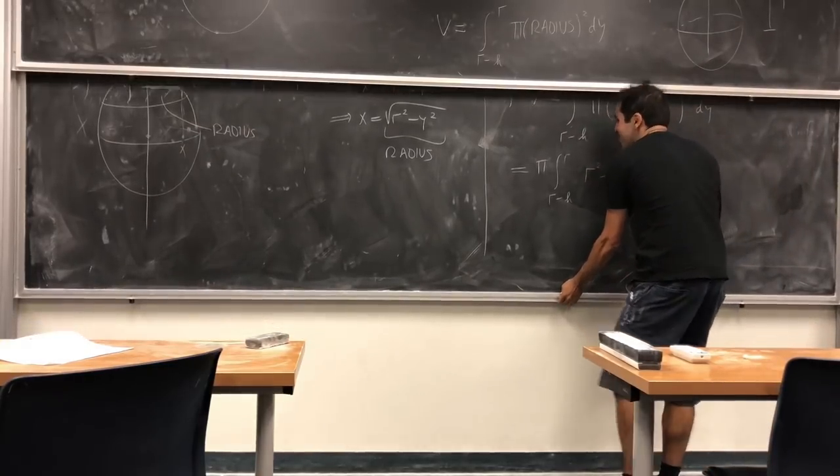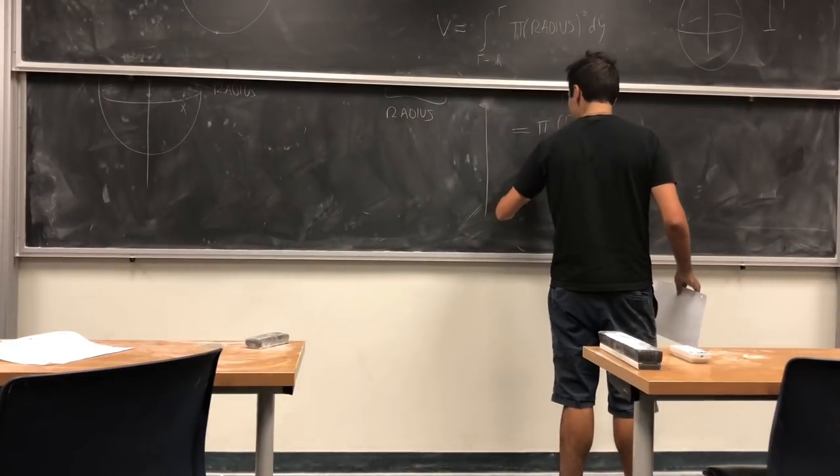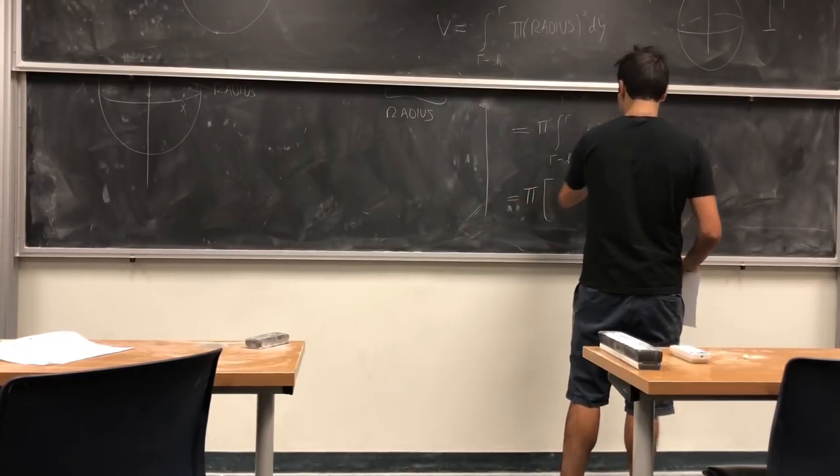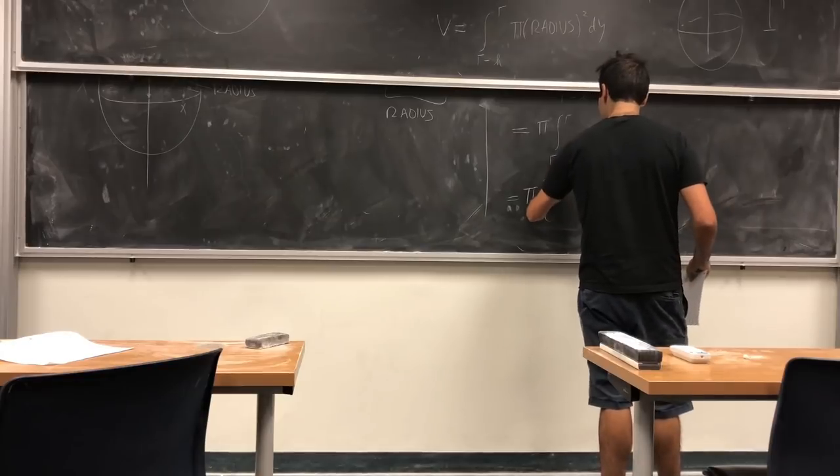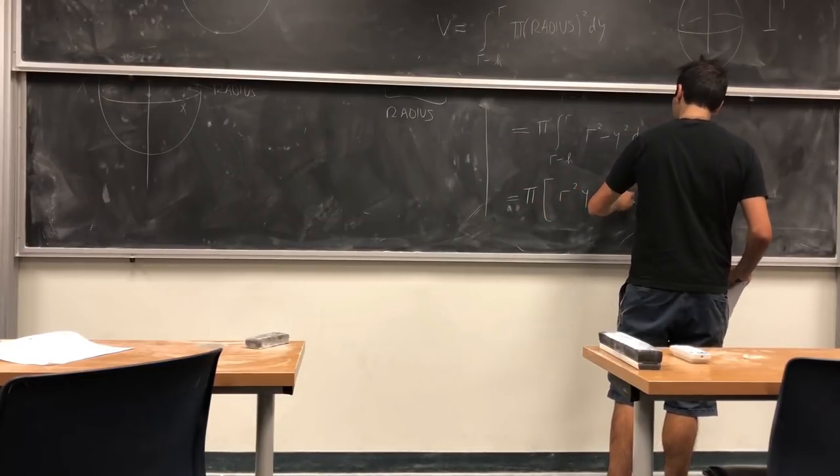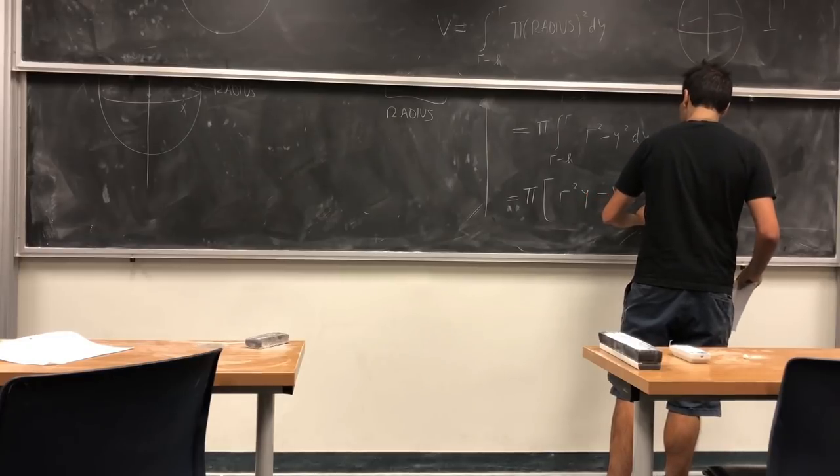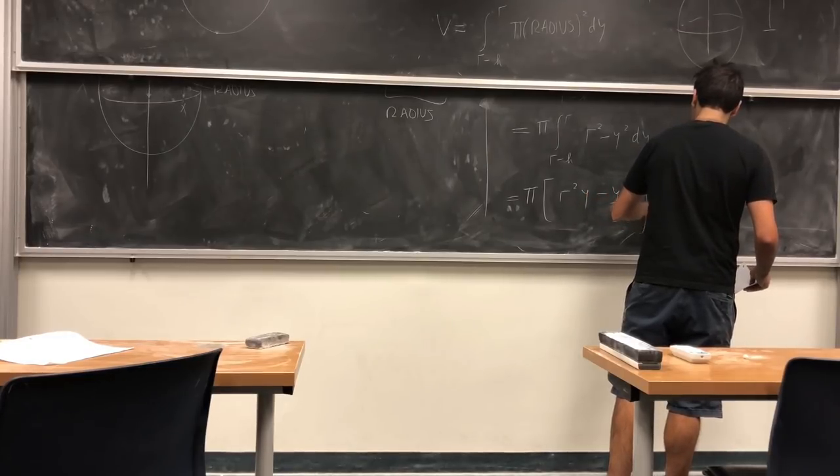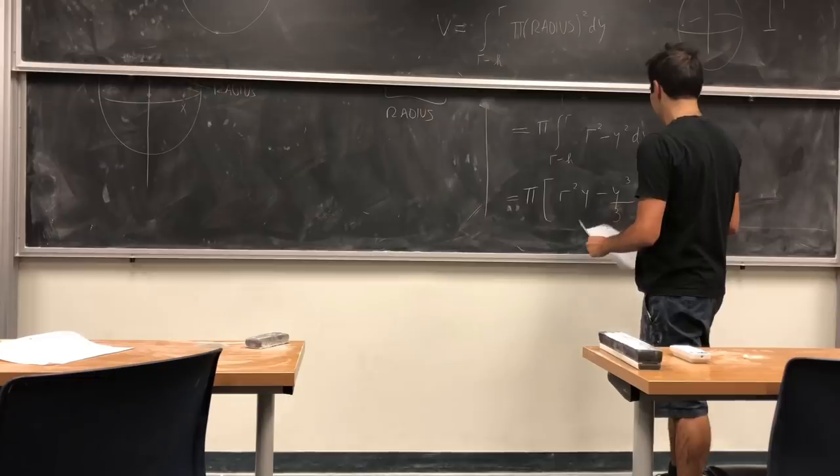Anyway, let's just find an antiderivative of that. So, again, r is a constant. So we get π(r²y - y³/3), and that's from r minus h to r.